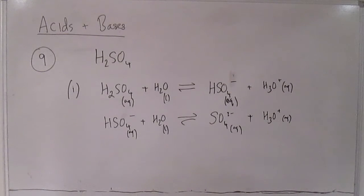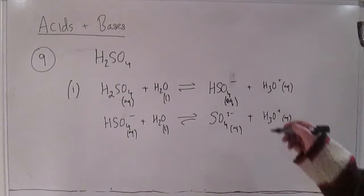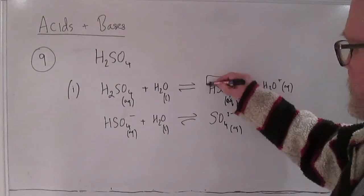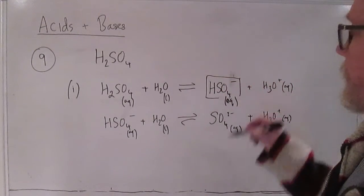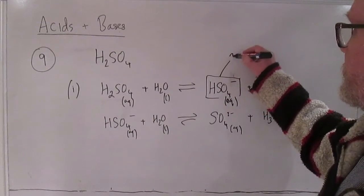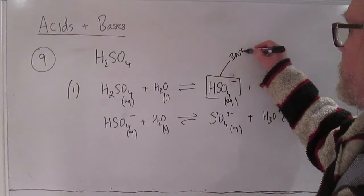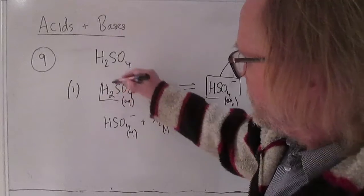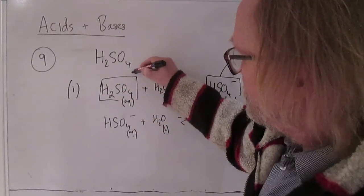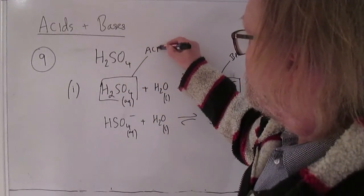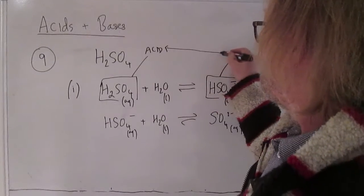And so then the next two parts C and D are just getting at the fact that in this equation HSO4 minus is playing the role of conjugate base with respect to H2SO4 which is the conjugate acid, so these are a conjugate pair.